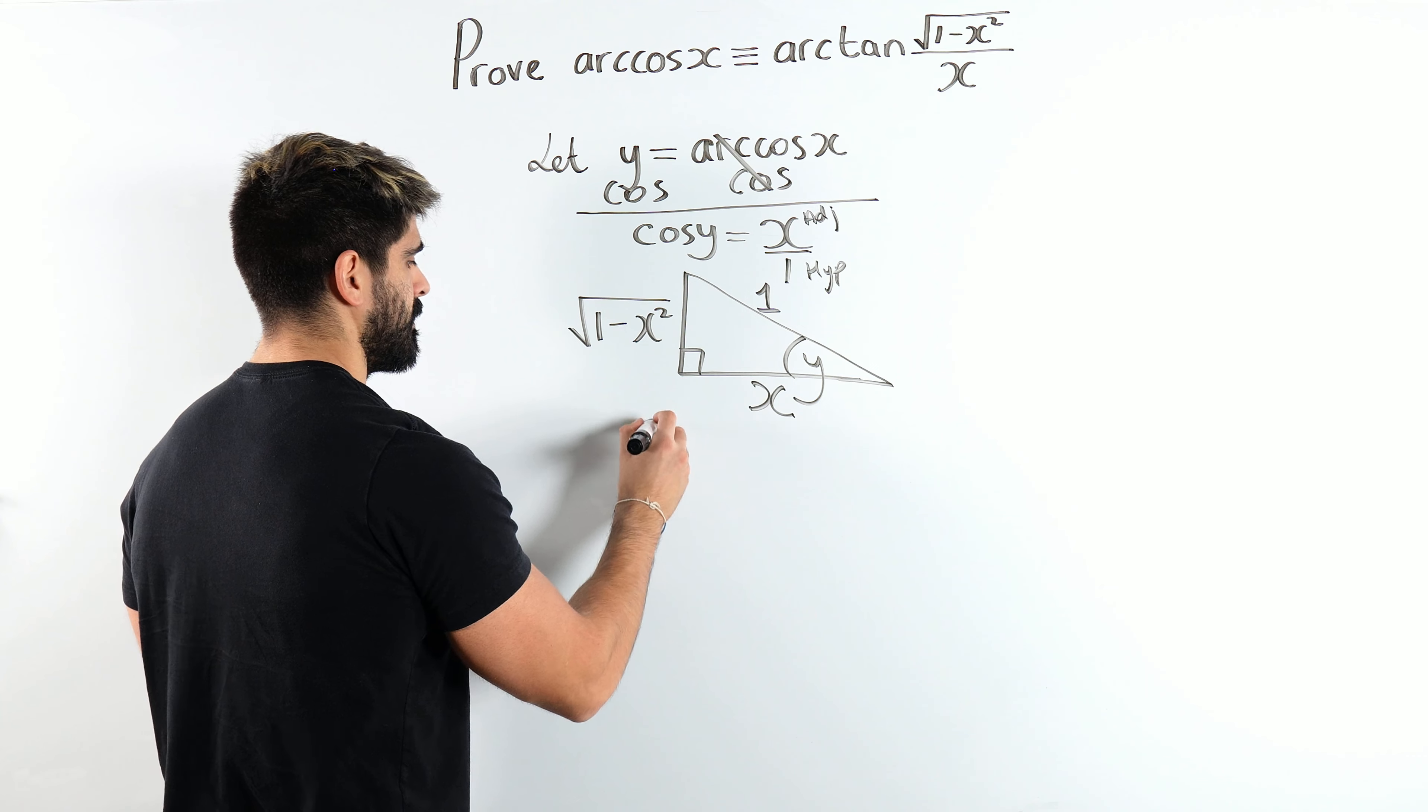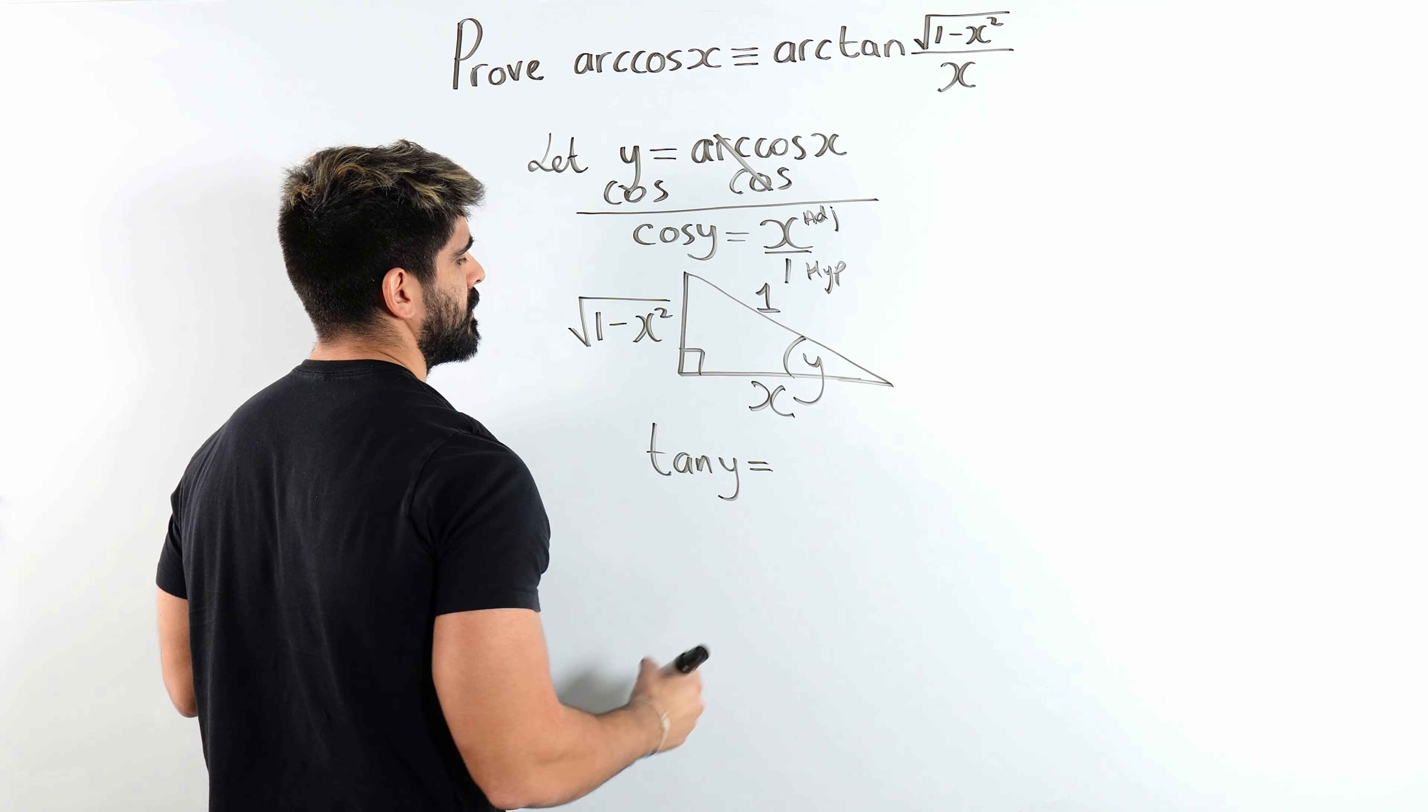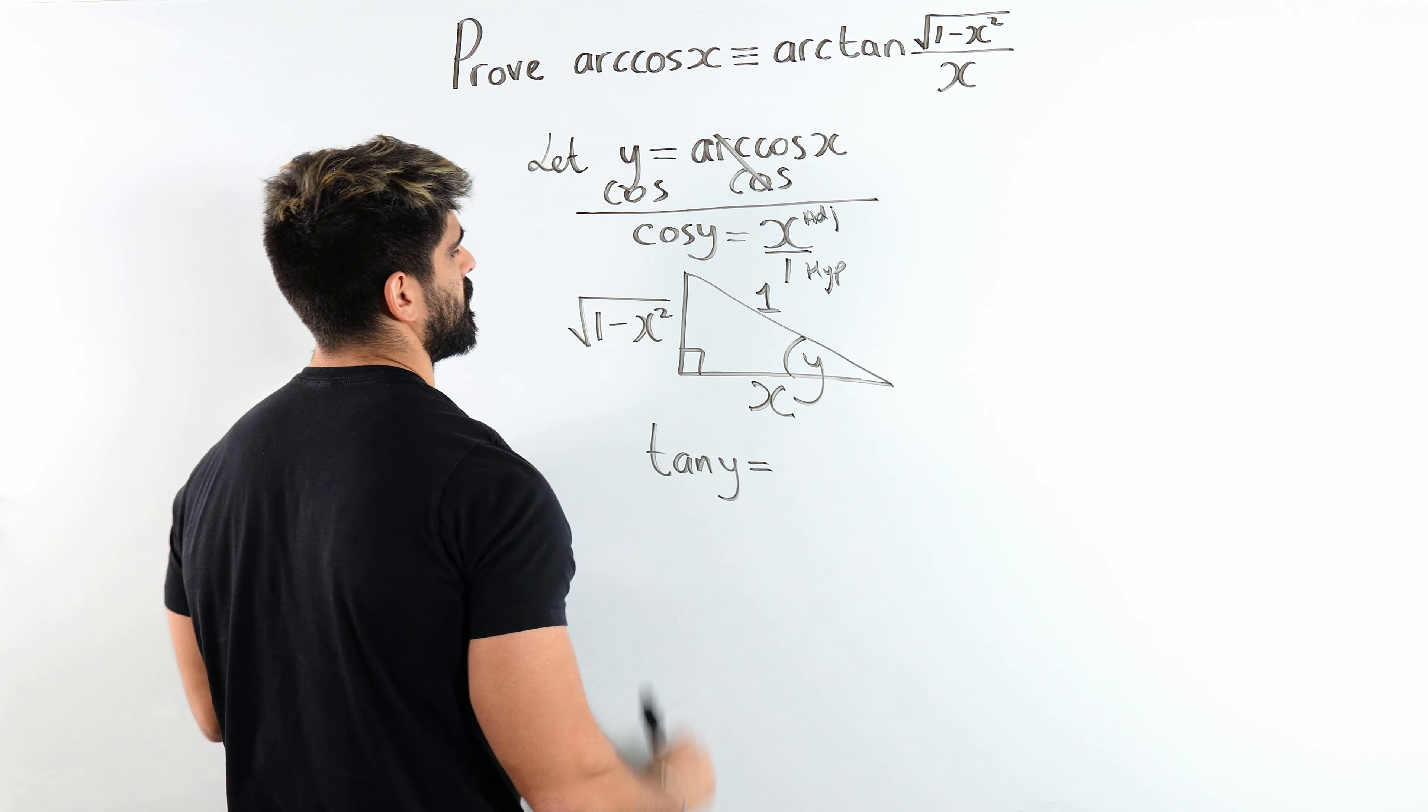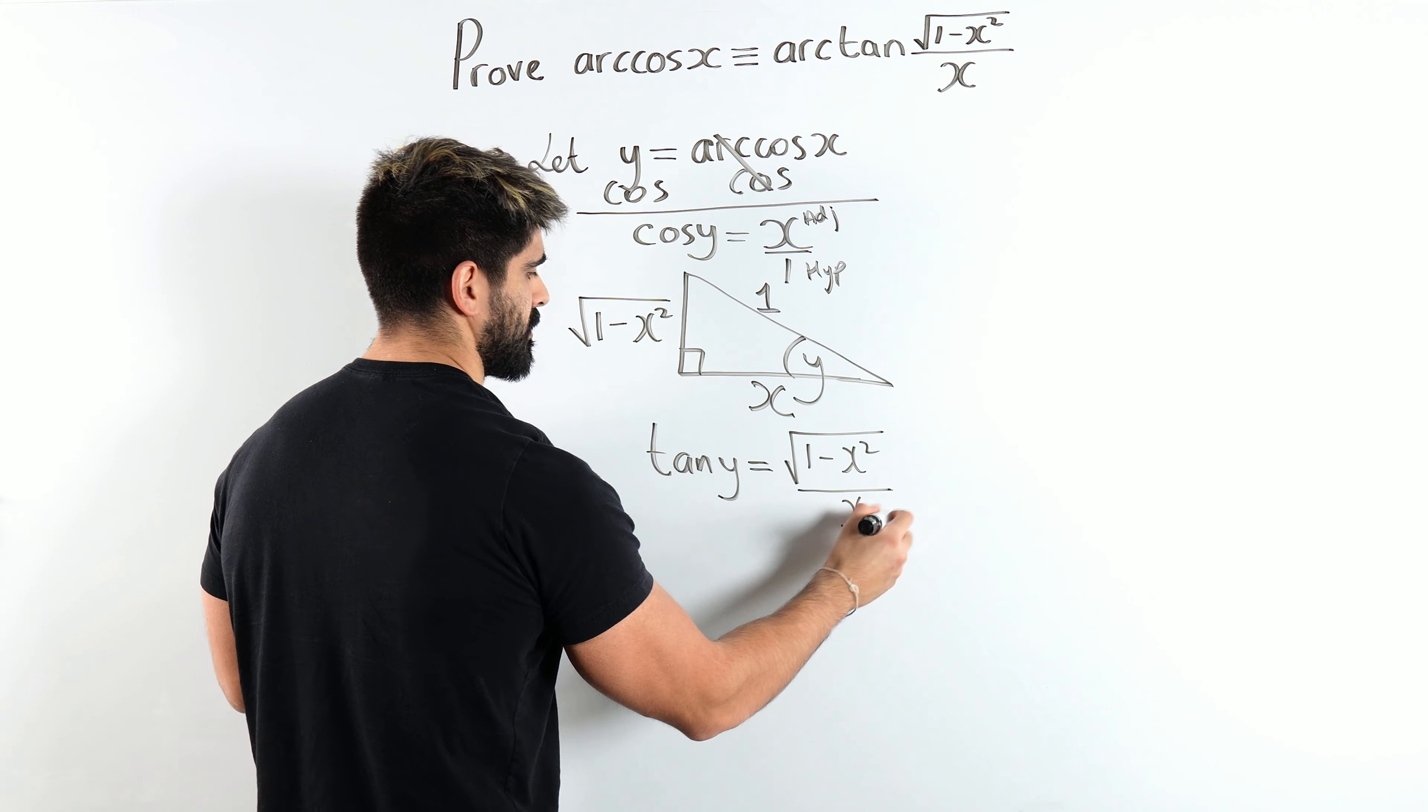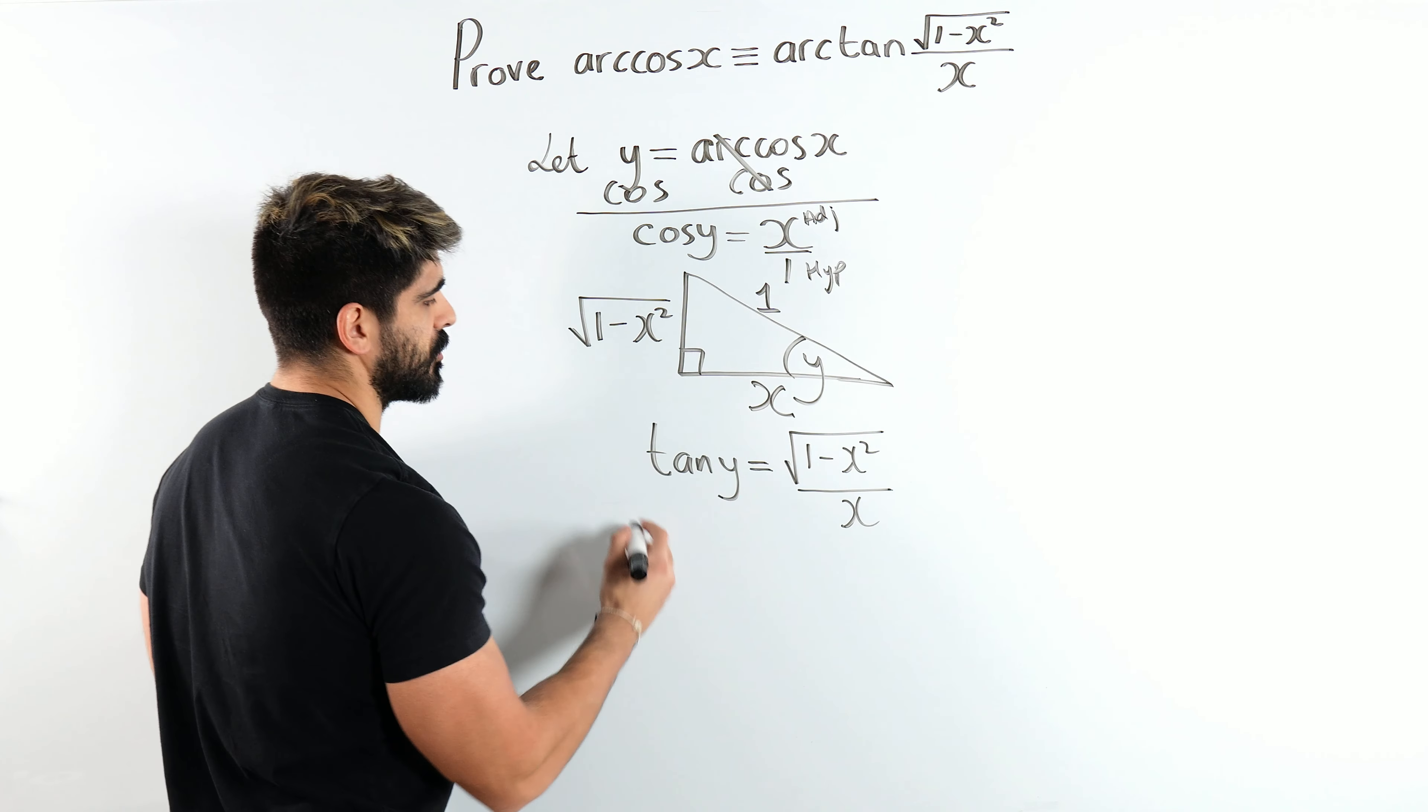Now, what are we trying to work with? We're trying to work with tan, aren't we? So from here, I'm going to work out what tan is. Tan is opposite over adjacent. So that becomes root 1 minus x squared over x.